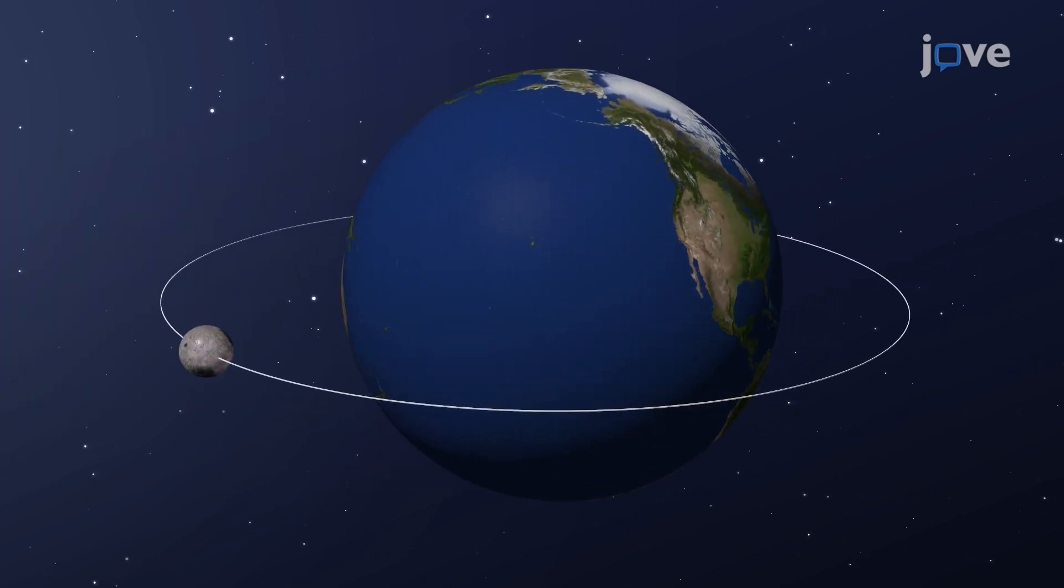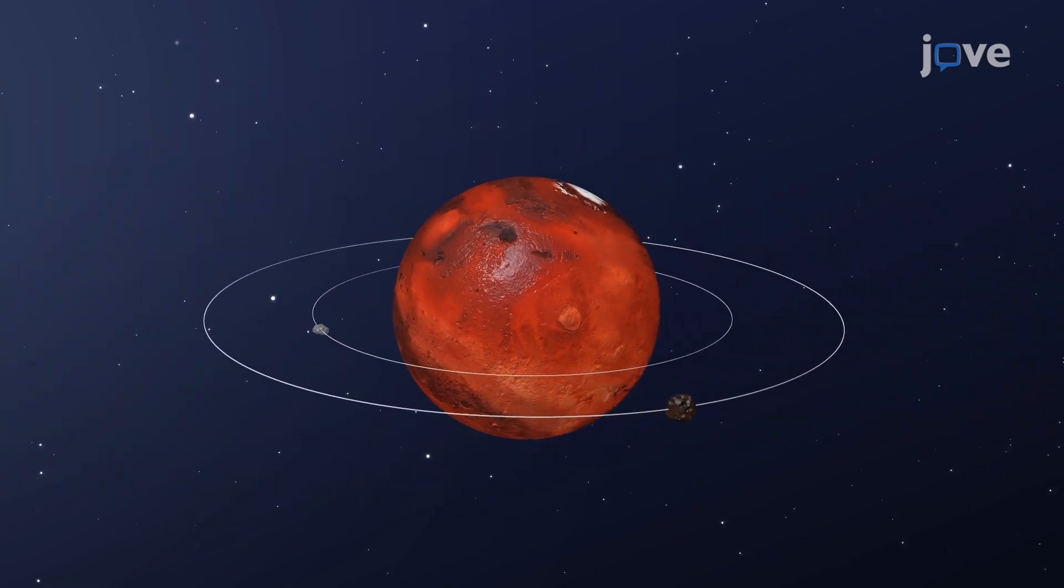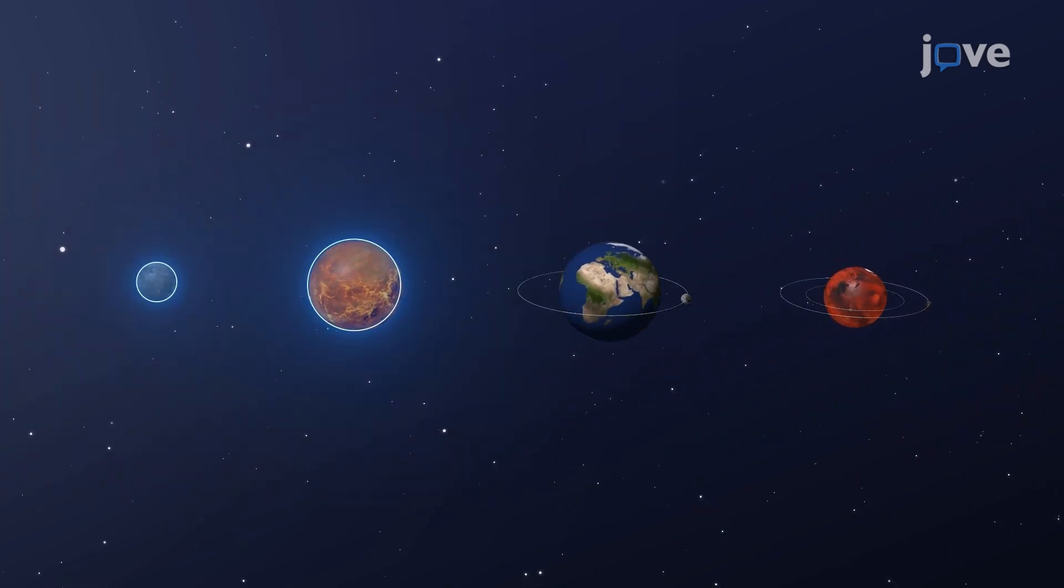Among these inner planets, Earth has one big moon, Mars has two tiny ones, and Mercury and Venus have none.